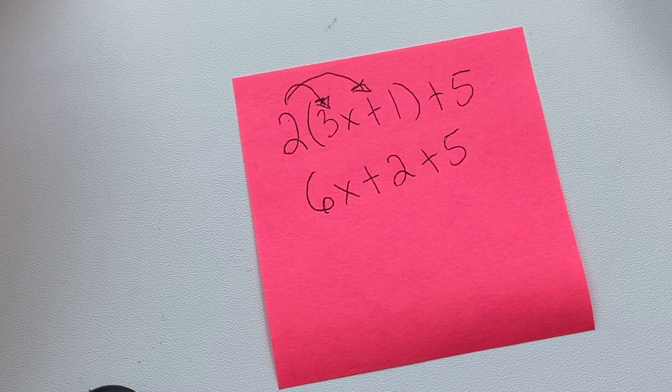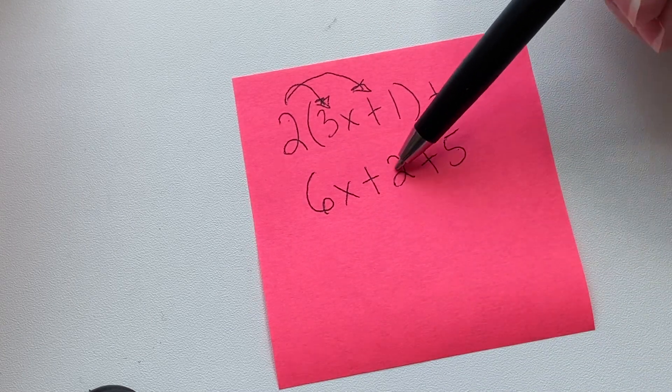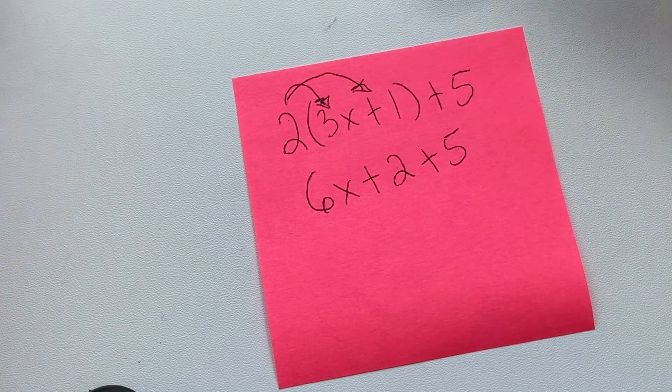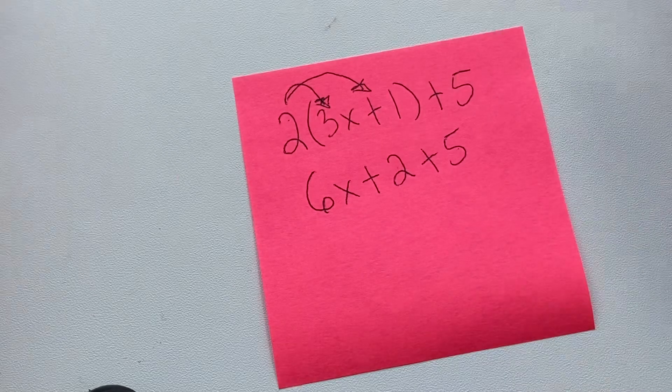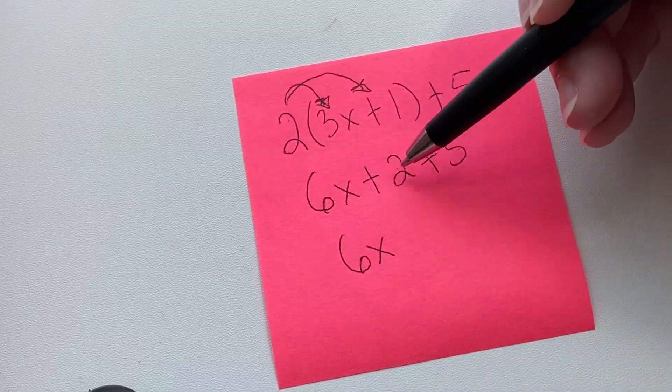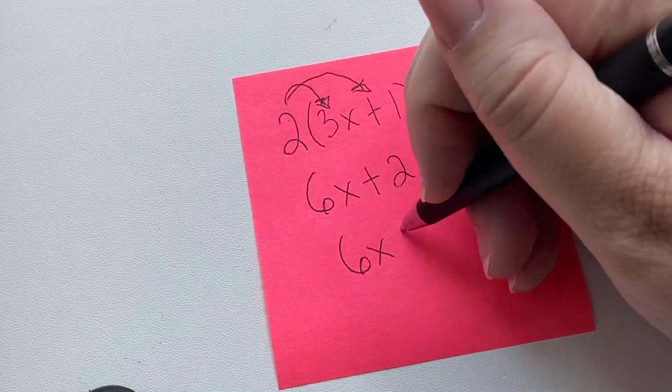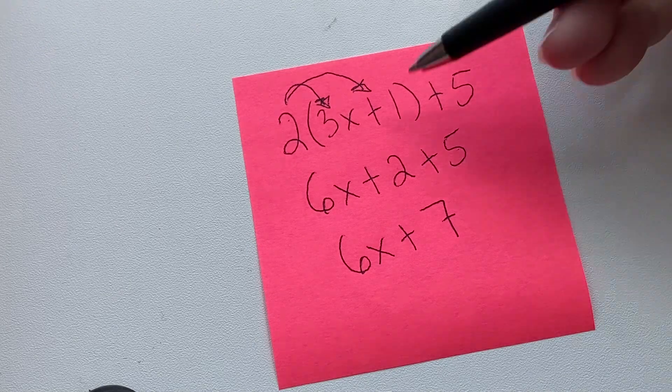plus 5. Now we can combine like terms. We'll see here that the 5 and the 2 are both constants or integers, so they are like terms. There are no other x's, so this will be 6x plus whatever 2 plus 5 is, which is 7. So that's how you do